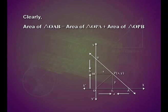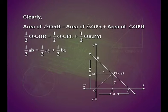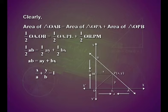Clearly, area of triangle OAB is equal to area of triangle OPA plus area of triangle OPB. So half of OA into OB equals half of OA into PL plus half of OB into PM, that is half of a into b equals half of a into y plus half of b into x. Taking half common, we get ab equals ay plus bx. On simplification, we have x upon a plus y upon b is equal to 1.